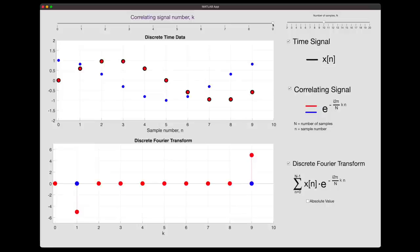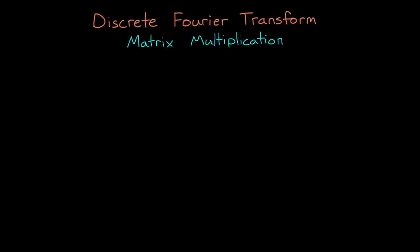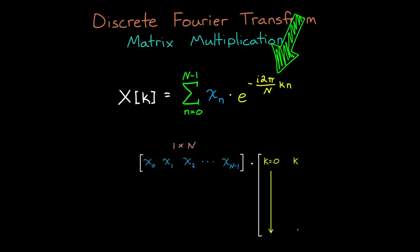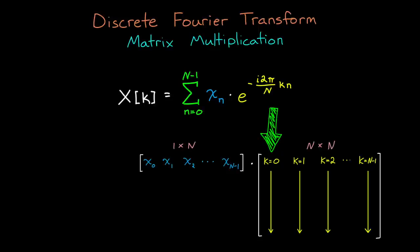But there's another cool way that we can think about the DFT. And that is as a rotation with matrix multiplication. If we go back to the equation, we can rewrite it as a matrix multiplication. x sub n is just a one by n vector of discrete time data. And the yellow exponential is an n by n matrix of complex numbers. And the first column corresponds to the sines and cosines associated with k equals zero. And the second column is k equal one, and so on, all the way up to k equals n minus one.